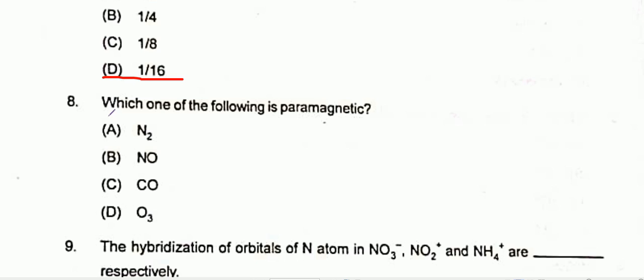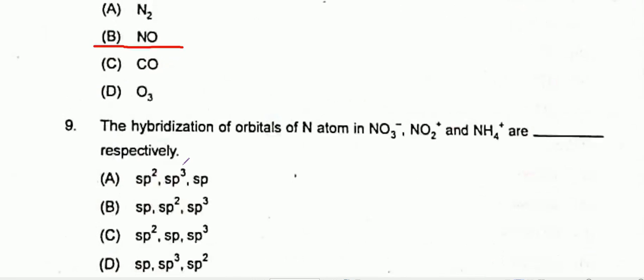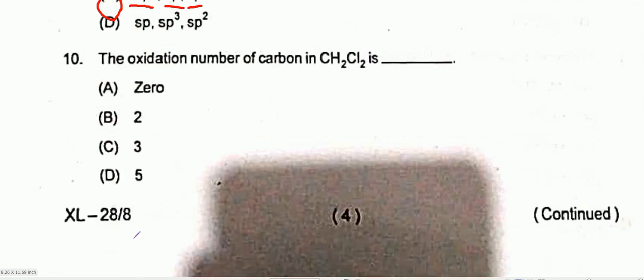Question 8: Which one of the following is paramagnetic? Option B is the correct one, that is NO. Question 9: The hybridization of the orbitals of the N atom in NO₃⁻, NO₂⁺, and NH₄⁺ are respectively Option C: SP², SP, and SP³. Question 10: The oxidation number of carbon in CH₂Cl₂ is 0. Option A is the correct one.